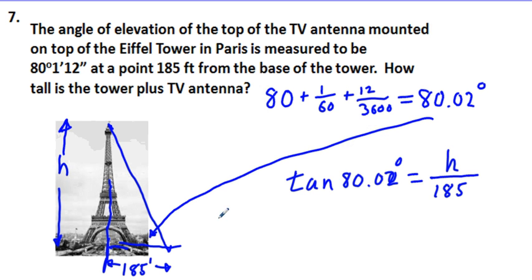And to solve for H, what is H going to be? 185 times the tangent of 80.02 degrees, which equals 1,051.33. If we want to round to the nearest foot.